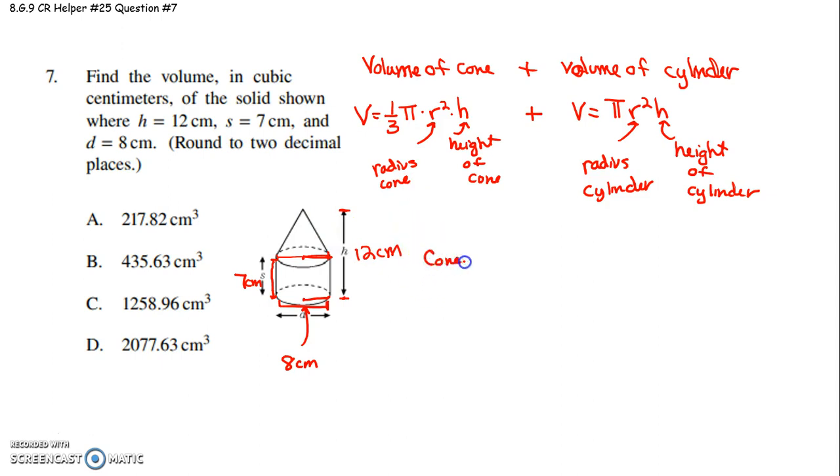So, if I look at the cone, let's talk about how to find the height of this cone. Well, to find the height of the cone, I know the overall height of the object is 12. I know the height of my cylinder is 7. Well, 7 plus 5 would be 12. So, the height of my cone must be 5 centimeters because 7 and then 5 more gets you to 12.